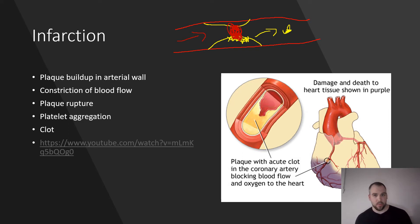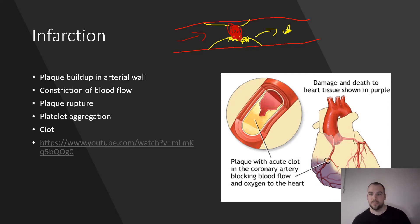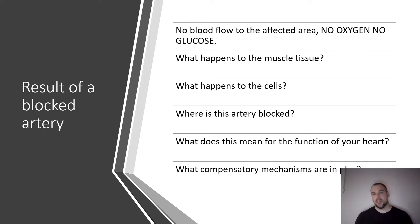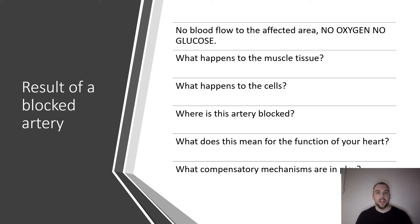Depending on where that plaque ruptured and where the MI happens, that could kill you instantly — it is the leading cause of cardiac arrest. Today we're talking about right ventricular infarcts. You're immediately going to get no oxygen, no glucose. All of those cells are going to immediately switch to an anaerobic mechanism to create energy, but that won't last very long, and there's no reprieve — there's no fixing that clot in the field. That tissue is going to start to die, absolutely.